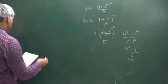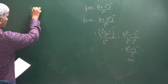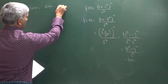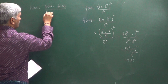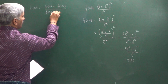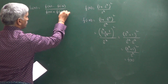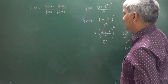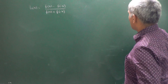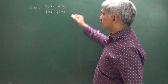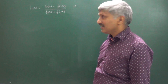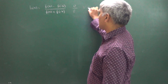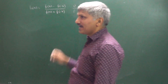One more example: h of x equal to f of x minus f of minus x, divided by f of x plus f of minus x. Observing directly, the numerator is an odd function and the denominator is an even function. Odd function divided by even function gives an odd function, so it is an odd function without any doubt.